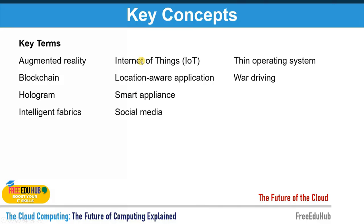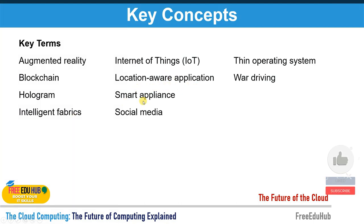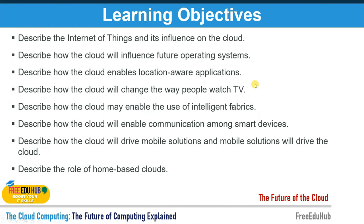The key concepts we'll be covering in this chapter include augmented reality, blockchain, hologram, intelligent fabrics, internet of things, location-aware applications, smart appliances, social media, thin operating systems, and war driving.